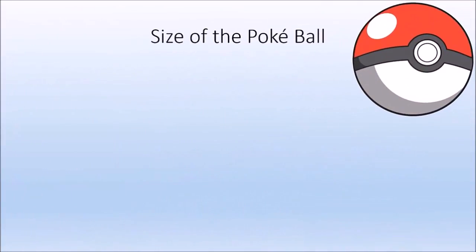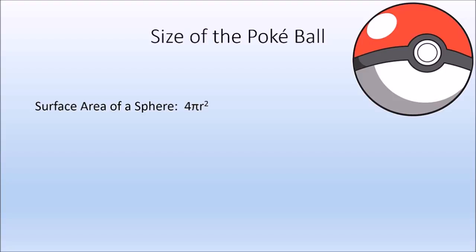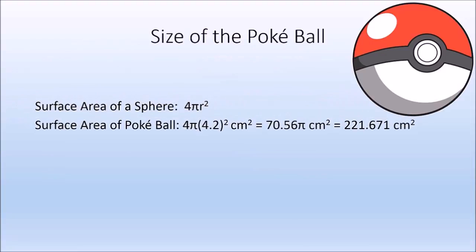We have the surface area of a sphere — since a Pokéball is roughly a sphere, I'll consider the button on the front negligible and assume it's a perfect sphere for simplicity. The surface area of a sphere is 4πr². So the surface area of the Pokéball is 4 × π × 4.2², which is roughly 70.56π square centimeters, equal to approximately 221.671 square centimeters.